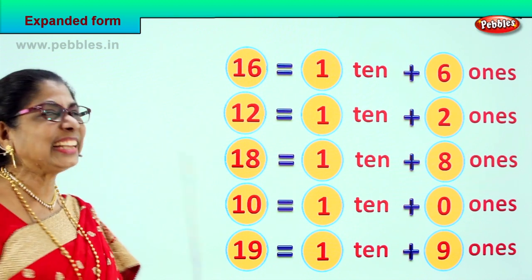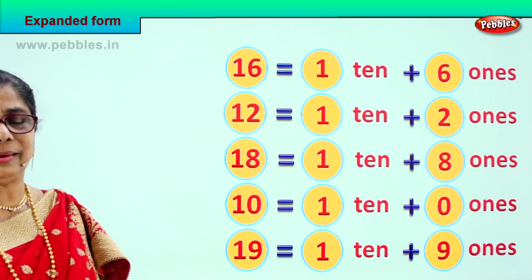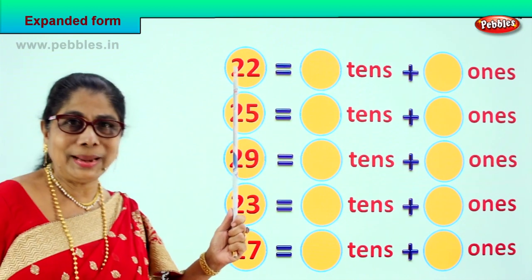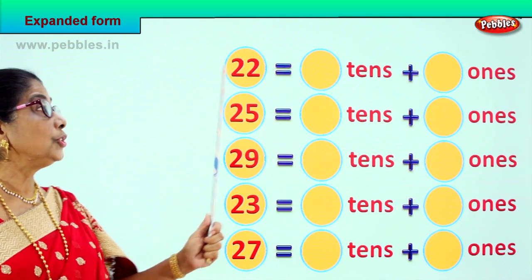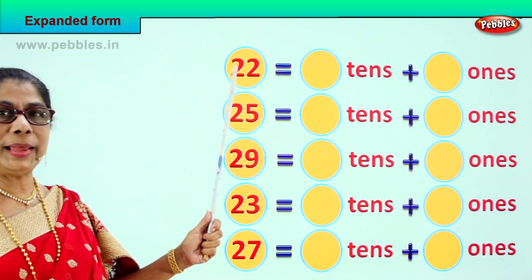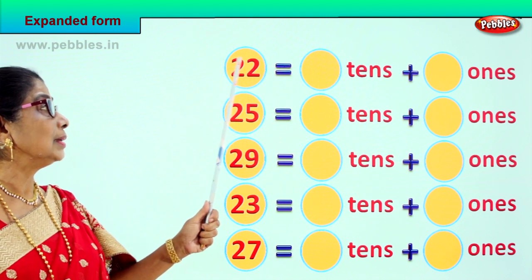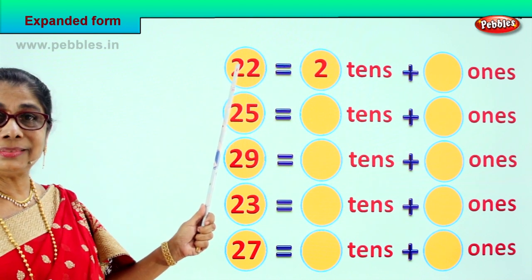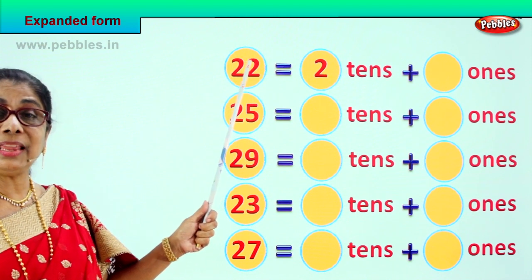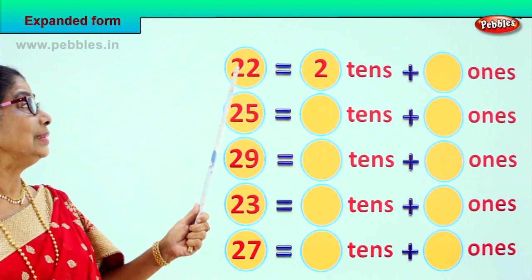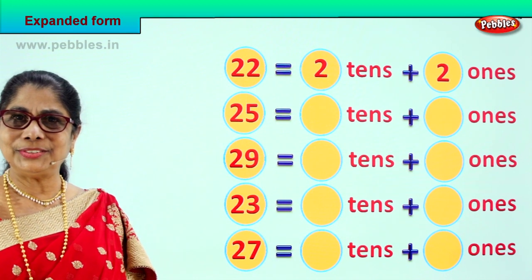Let's take another set. This is called expanded form — the number given, you expand. Look, what number is this? 22. 2 and 2, 22. How many ones? How many tens? The tens place gives 2 tens, the ones place gives 2 ones. 2 tens, 2 ones. Very good!